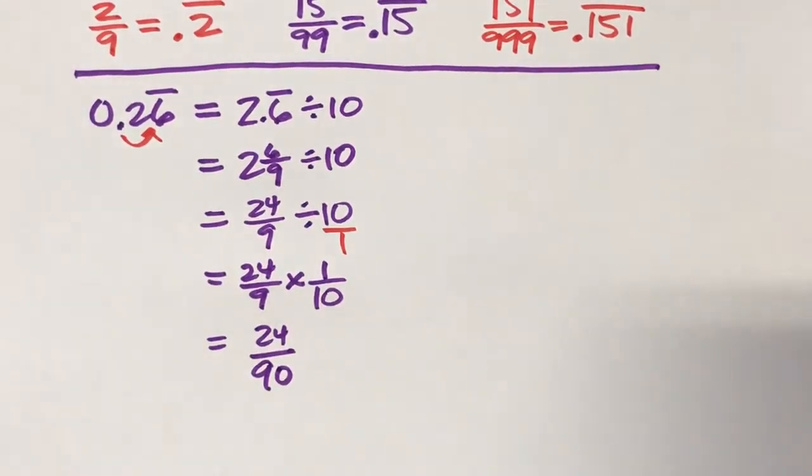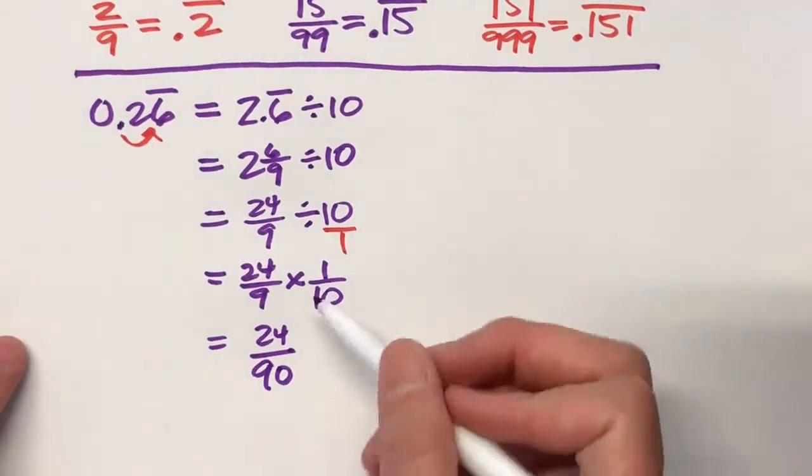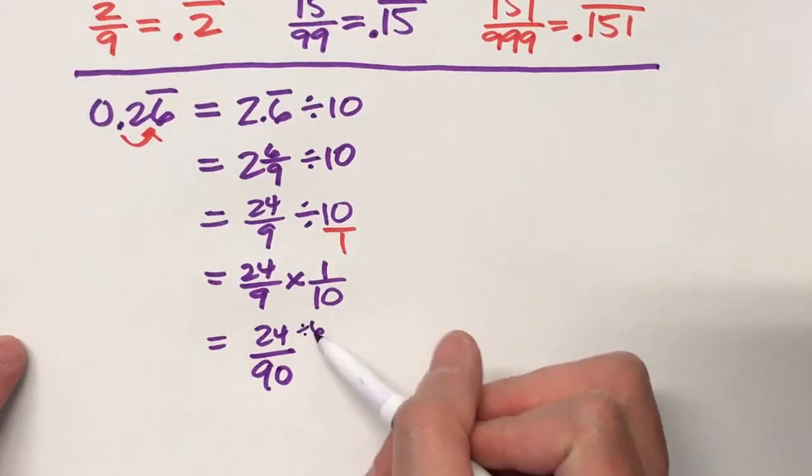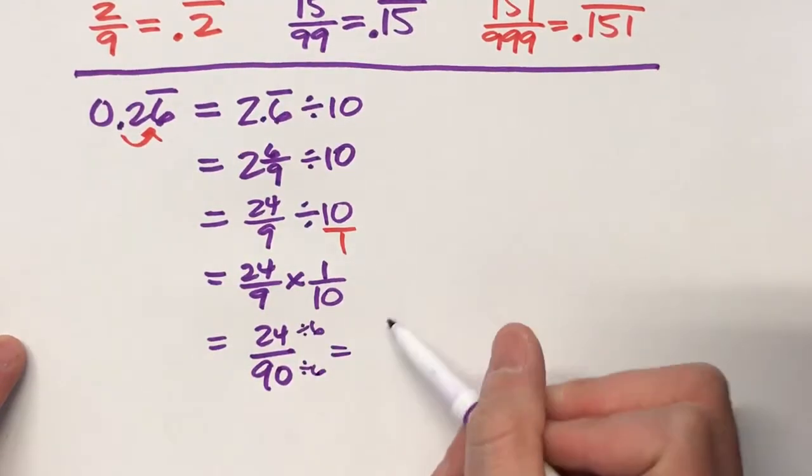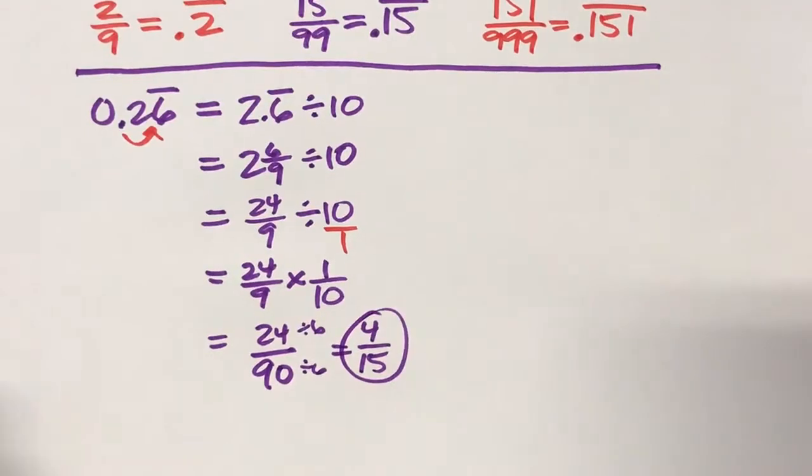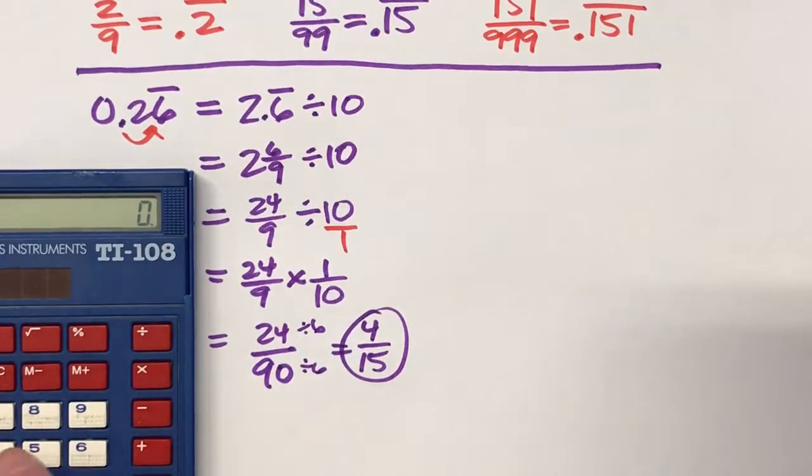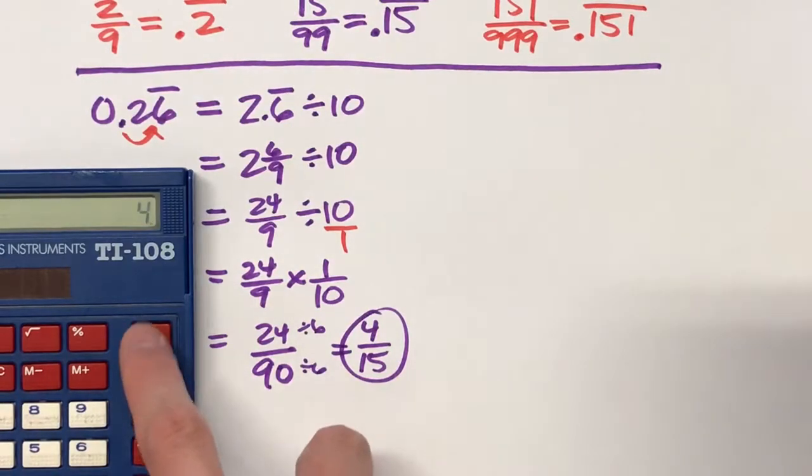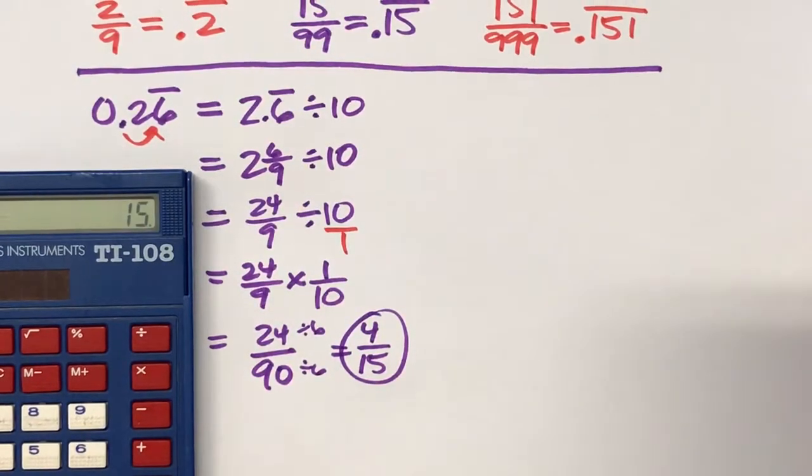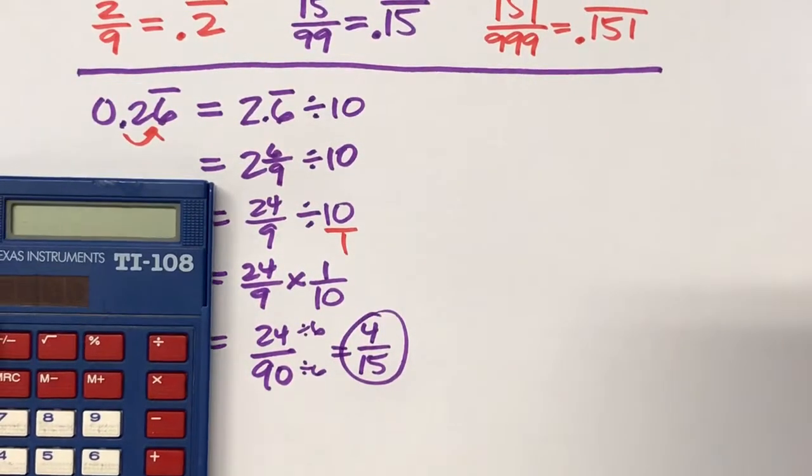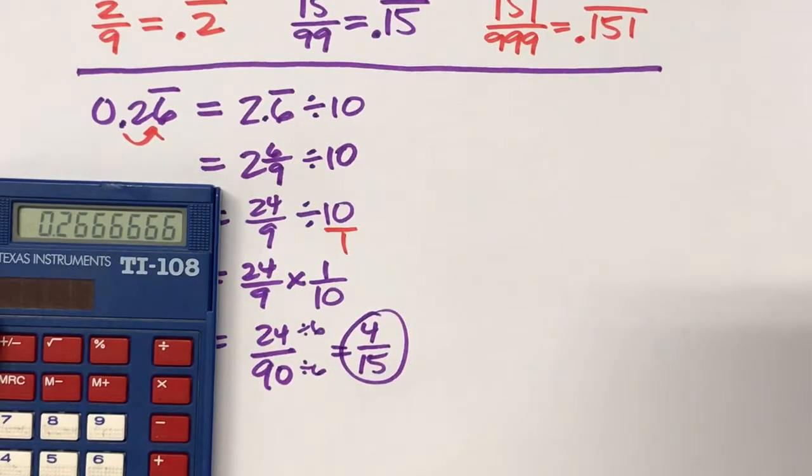24 ninths. And I should reduce this because I know 24 and 96 goes into the top and bottom. So this is really 4 fifteenths. And if you're not sure, you can always check with a calculator. 4 divided by 15, it should be 0.2666666. And it is.